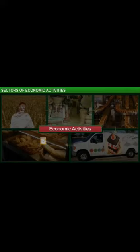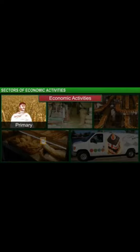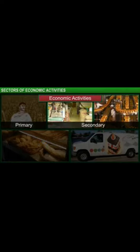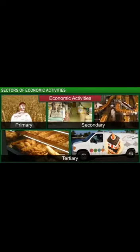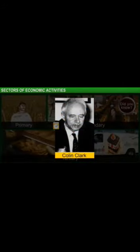Economic activities are classified into three different groups called the primary sector, the secondary sector, and the tertiary sector. The three-sector hypothesis that divides economic activities into primary, secondary, and tertiary sectors was developed by Colin Clark, a British economist, and Jean Fourastié, a French economist.